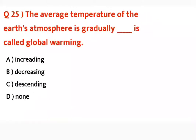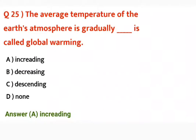Question number twenty-five: The average temperature of the Earth's atmosphere is gradually increasing — this is called global warming.